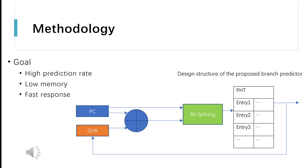Knowing the weaknesses of current branch prediction schemes, I decided to propose and design a new branch predictor with the following properties: higher prediction accuracy than 1-bit and 2-bit saturation counter predictors; lower memory overhead than 2-level branch predictors such as the B-mode predictor mentioned previously; and faster response speed than hybrid and neural network predictors.